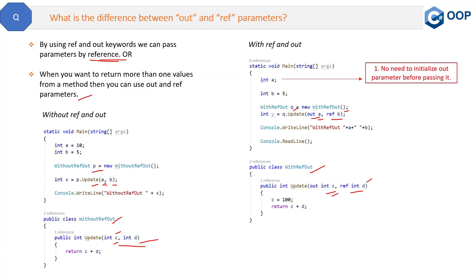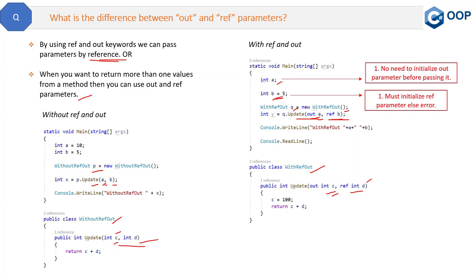Now let's look at the differences between out and ref parameters. The first difference: in case of out parameters, there is no need to initialize the out parameter before passing it. You can set a value but you can also just declare it — it's not required. However, for ref parameters, you must initialize them before passing. If you just declare b without assigning a value and pass it as a ref parameter, it will throw a compile-time error.